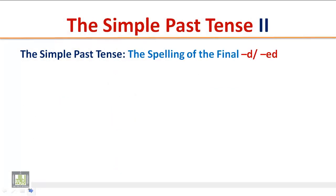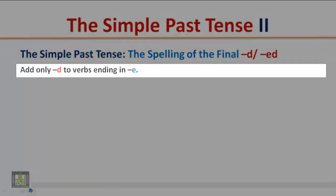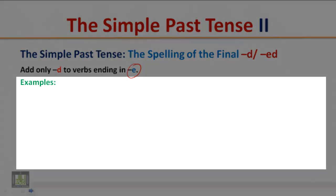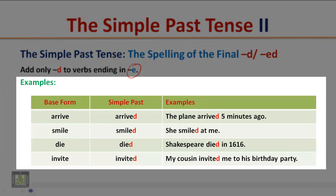The Simple Past Tense — spelling of the final D or ED. Rule 1: Add only D to verbs ending in E. Examples: 'arrive' ends in E, so add only D — the plane arrived five minutes ago. 'Smile' ends in E — she smiled at me. 'Die' ends in E — Shakespeare died in 1616. 'Invite' ends in E — my cousin invited me to his birthday party.